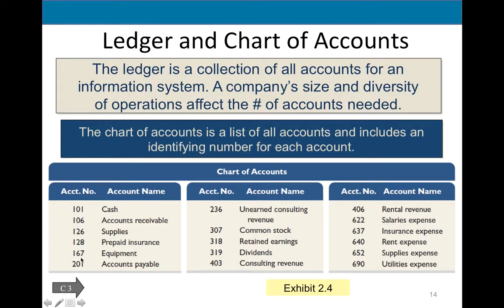However, all assets have to be numbered in the 100s; for larger businesses, assets are numbered in the 1000s. Assets list the most liquid accounts first — cash is very liquid. Accounts used for a long time, such as equipment, land, or patents, will have higher 100-range numbers. 200s are liabilities, 300s are stockholders' equity accounts, 400s are revenue accounts, and 500s or 600s are expense accounts.